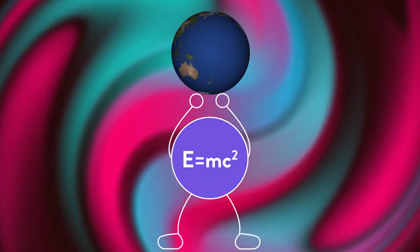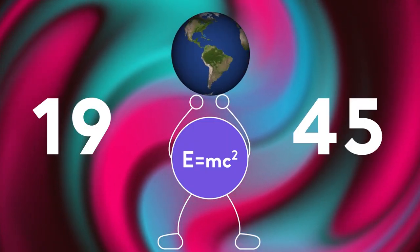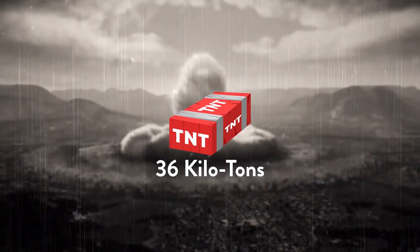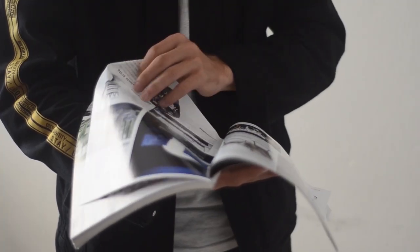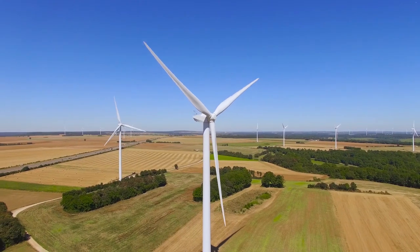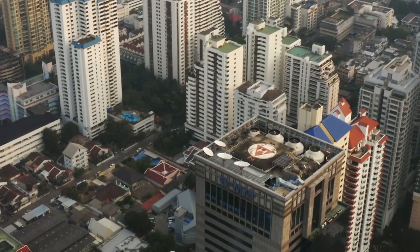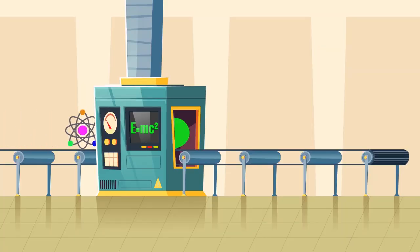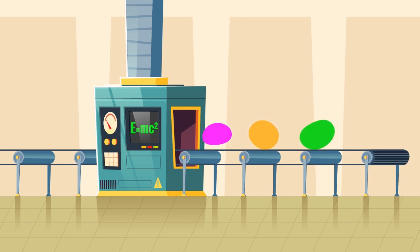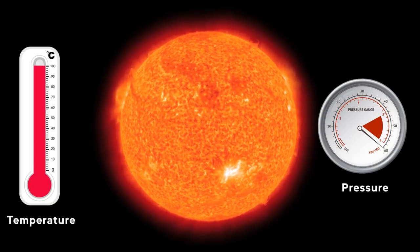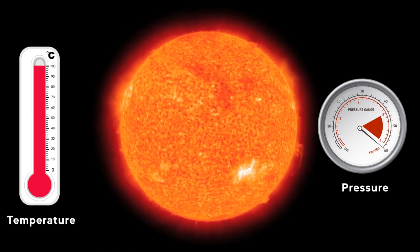The power of this equation was shown to the world in 1945 when the US dropped the atomic bombs on Hiroshima and Nagasaki, releasing energy equal to 36 kilotons of TNT. Even your weekly magazine has more than enough mass that can be converted into energy to power a city for a whole month. But the problem is that converting each and every atom into pure energy is impractical, as it would require temperatures and pressures greater than those at the core of the sun.